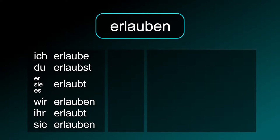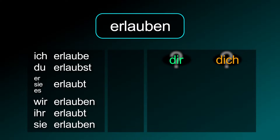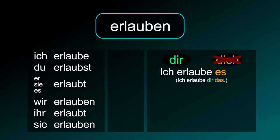Erlauben conjugation: ich erlaube, du erlaubst, er/sie/es erlaubt, wir erlauben, ihr erlaubt, sie erlauben. This verb needs the dative and the accusative case. Therefore, the correct way to say 'I allow you to do that' is ich erlaube es dir or ich erlaube dir das.